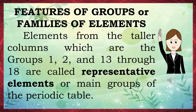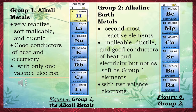Features of groups or families of elements. Elements from groups 1, 2, and 13 through 18 are called representative elements or main groups. Group 1 — Alkali metals: very reactive, soft, malleable, and ductile, good conductors of heat and electricity, with only one valence electron. The alkali metals are hydrogen, lithium, sodium, potassium, rubidium, cesium, and francium.